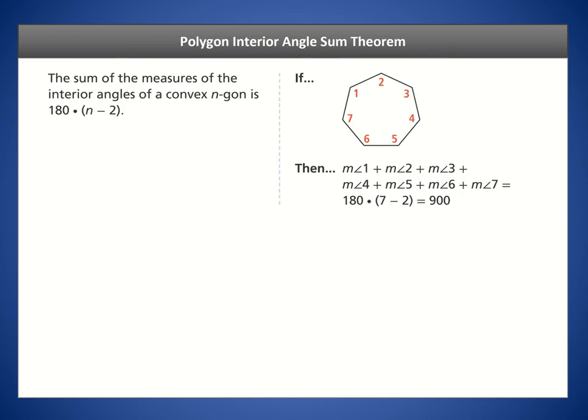This is known as the Polygon Interior Angle Sum Theorem. The sum of the measures of the interior angles of a convex n-gon — any polygon with any number of sides — is given by the formula: the sum of the angles equals 180 times (n minus 2), the number of triangles that can be formed from one vertex.